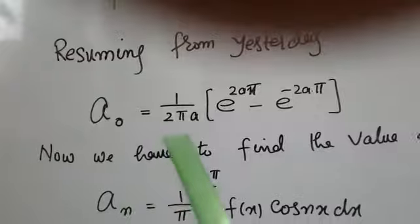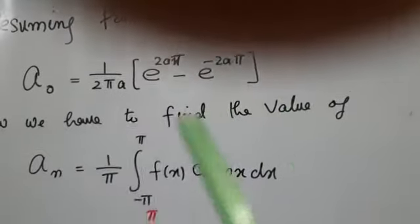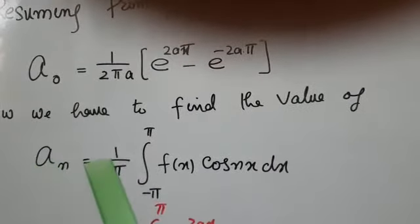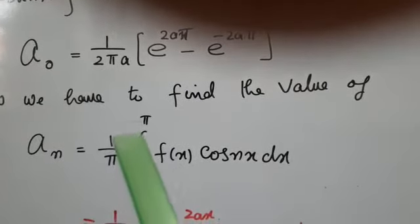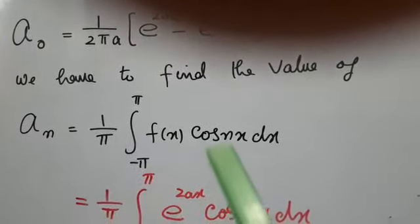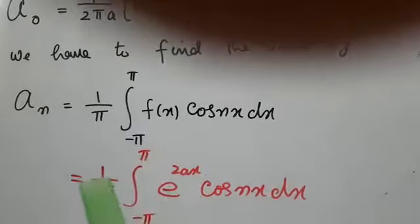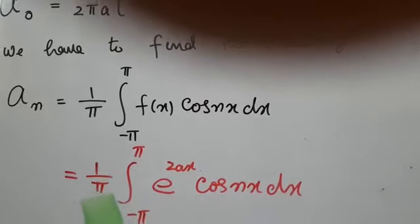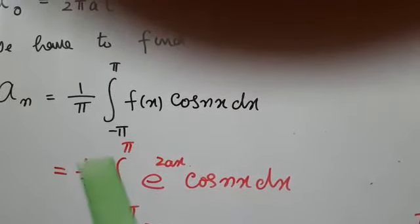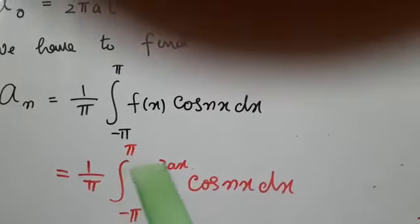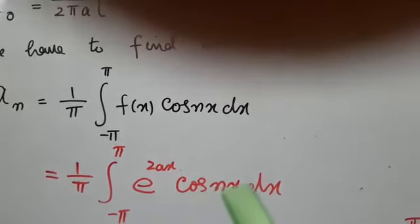Now we have to find the value of aₙ equals 1 over π integral minus π to π f of x cos nx dx, equals 1 over π integral minus π to π e to the 2ax cos nx dx.